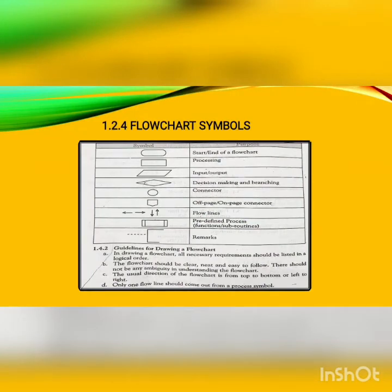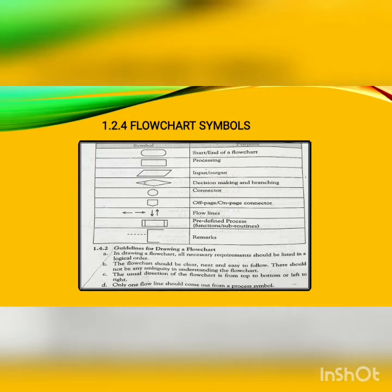Flowcharts explain a process clearly through symbols and texts. They use special shapes to represent different types of actions or steps in a process. Lines and arrows show the flow of steps. Have a look at the table given in front of you. The very first symbol is an elongated oval symbol which represents the starting and ending of a flowchart. All processing is entered using a rectangle symbol.